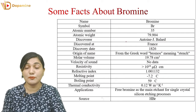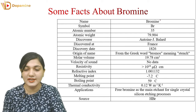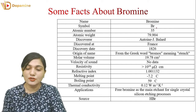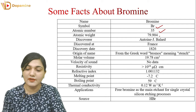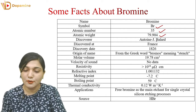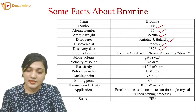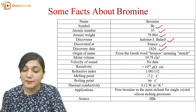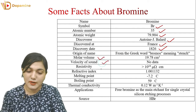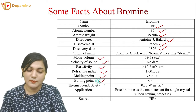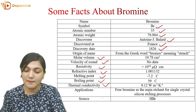Now coming to bromine. Bromine chemistry is used, so here are some facts about bromine. Bromine has atomic number 35 and atomic weight 79.904. The discoverer was Antoine J. Balard, discovered in France in 1826. Its name came from the Greek word 'Bromos,' which means stench. Properties include molar volume, velocity of sound, resistivity, refractive index, melting point, boiling point, and thermal conductivity. Its application: free bromine is used for the single-crystal silicon etching process.